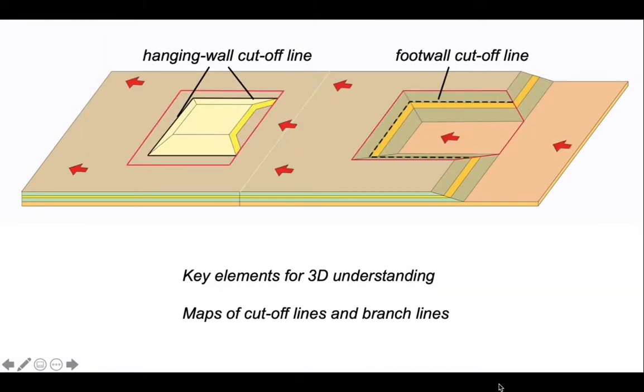So these are the key elements for understanding thrust structures in three dimensions: maps of cutoff lines and of branch lines. The cutoff lines represent the geometry of ramps. The branch lines tell us about how thrusts join together.